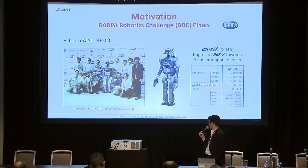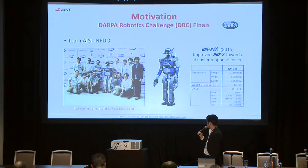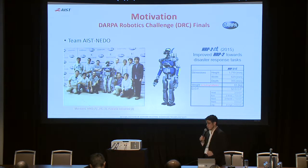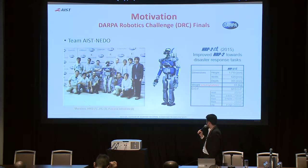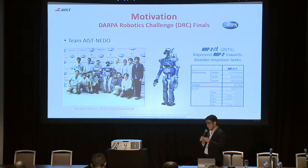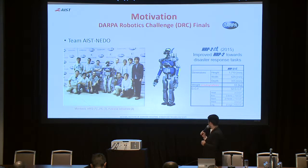We participated as Team AIST-NEDO, comprising seven members from the humanoid research group, three members from the Joint Robotics Laboratory between CNRS and AIST, and two members from Kawada Industries. Each member was responsible for one DRC task. We used the HRP2-KAI (KAI meaning improvement), developed in 2015 as an HRP2 improved for disaster response — featuring a different hand and end effector, longer arms and legs, and a 3D LRF implemented in the head pitch.